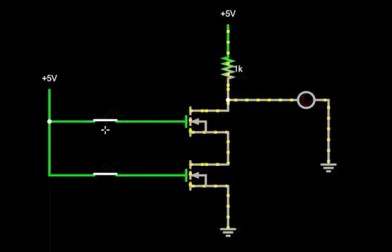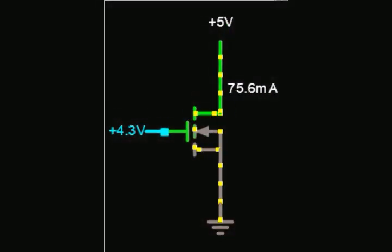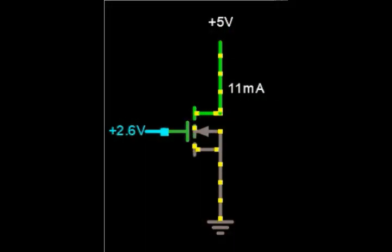While the Enhancement MOSFET is off by default without applying voltage to the gate base, the depletion MOSFET is connected due to the presence of the channel. By applying a negative voltage to the gate base, we can reduce the width of the channel.